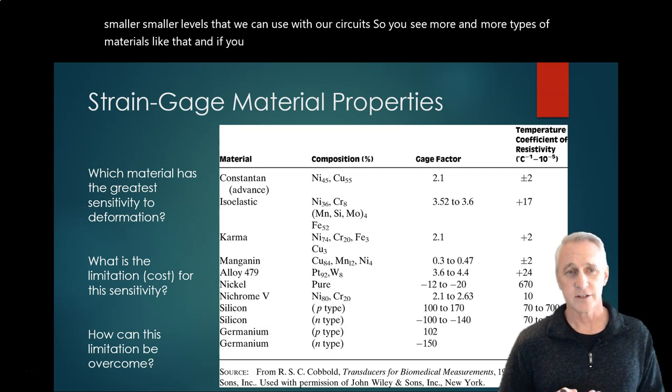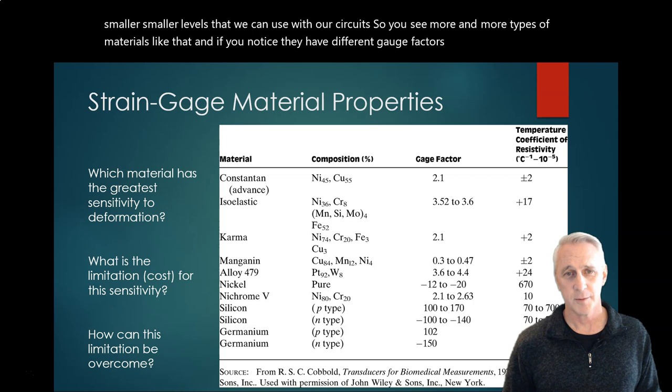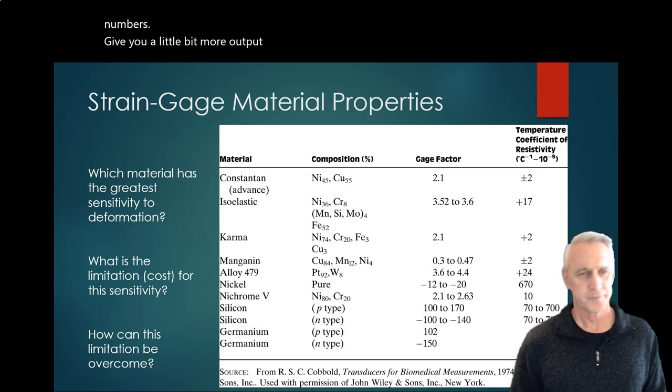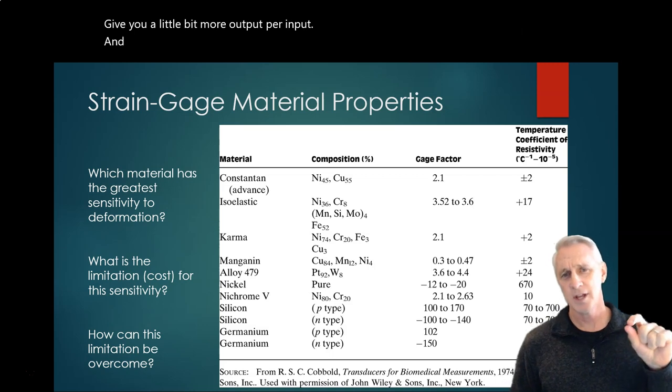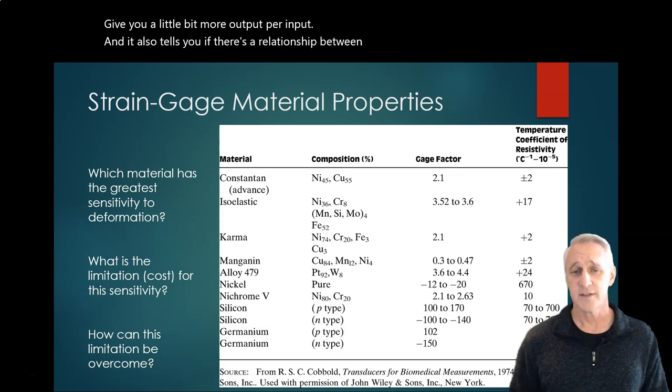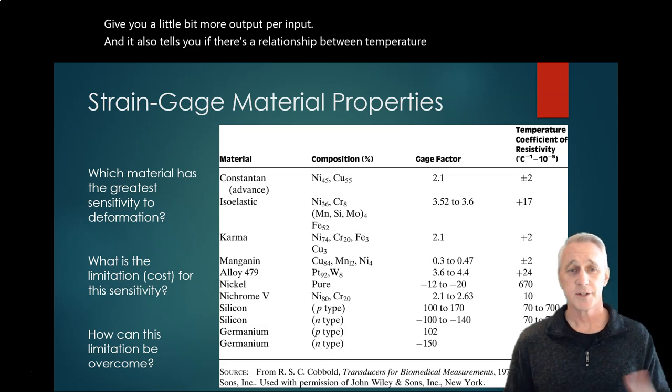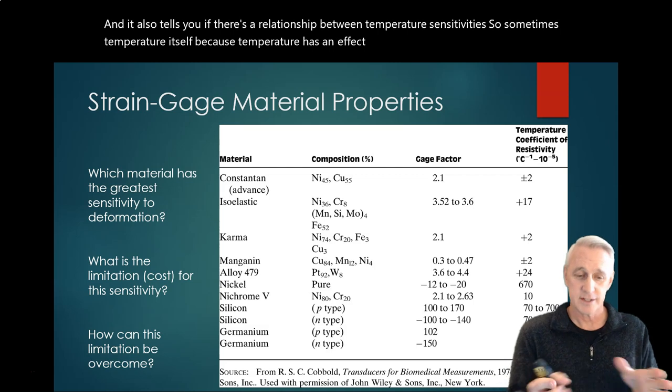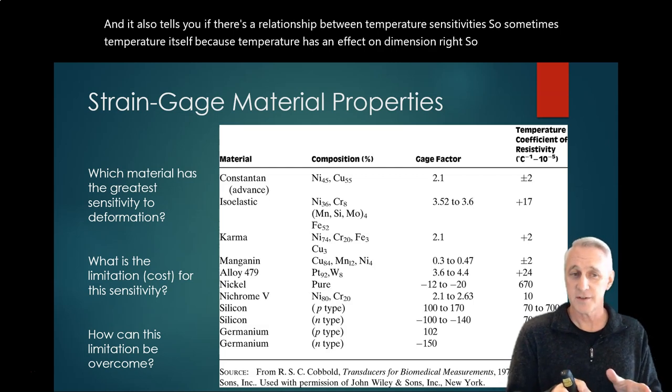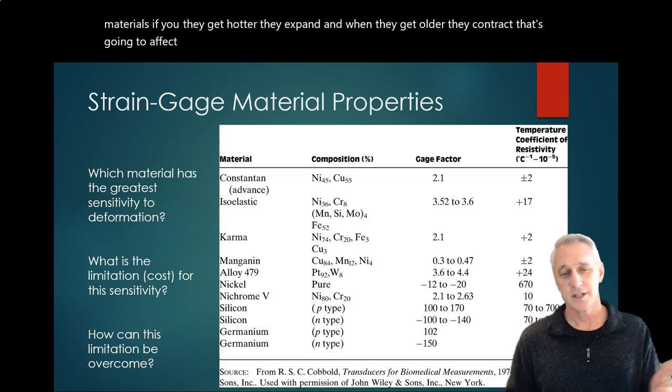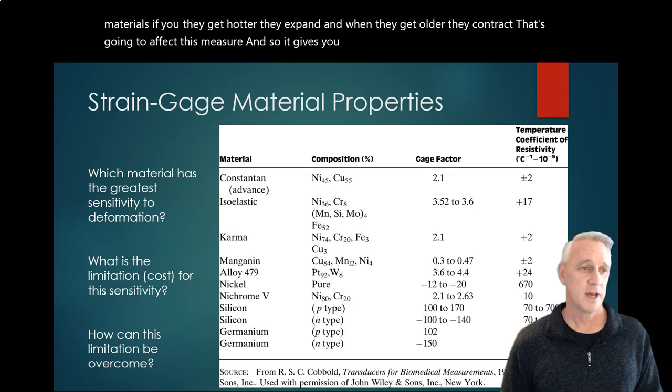And if you notice, they have different gauge factors. So the ones with larger numbers give you a little bit more output per input. And it also tells you if there's a relationship between temperature sensitivities. So sometimes temperature itself - because temperature has an effect on dimension - a lot of materials, if they get hotter, they expand, and when they get colder, they contract. That's going to affect this measure. And so it gives you kind of some sense of how to do that.